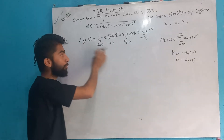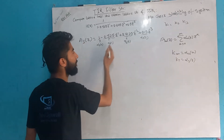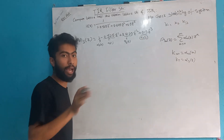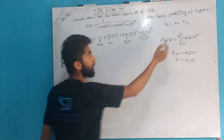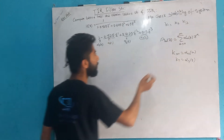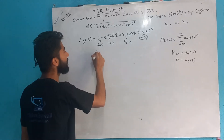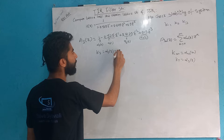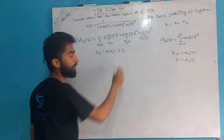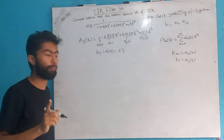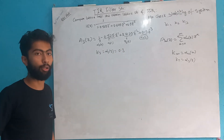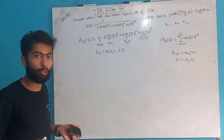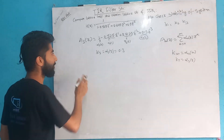In A3(z) we have all the variables, so we have to find K3. K3 is alpha(3,3), which equals 0.3. Very good. So with K3 found, we now need K2 and K1, and then our problem is done.